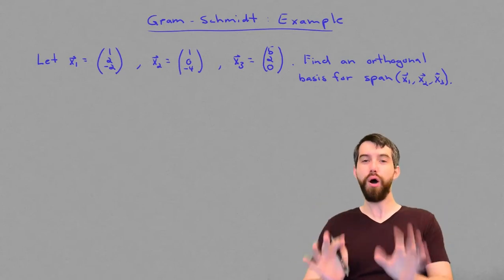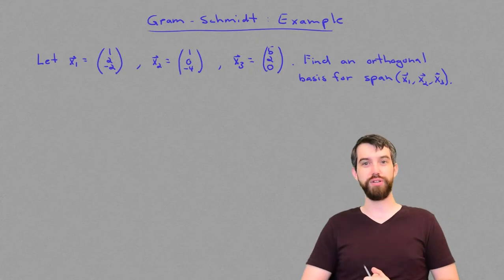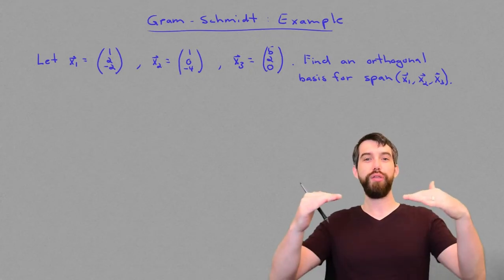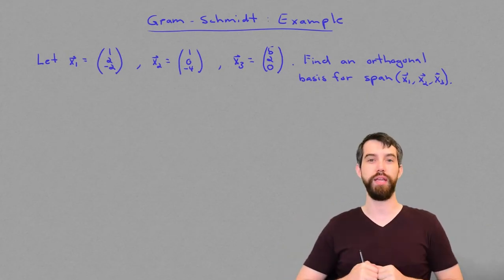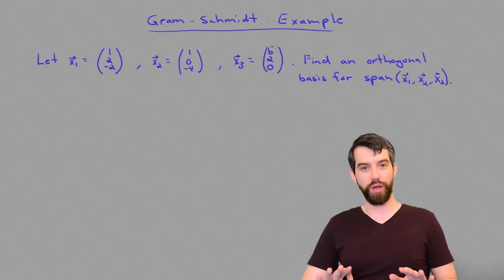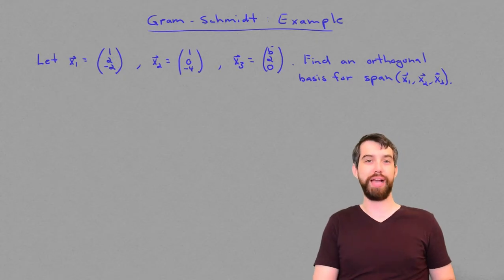In this video, we're going to look at a concrete example of Gram-Schmidt, where I've given you three specific vectors x1, x2, x3. And what our goal is, is to find three orthogonal vectors, a v1, a v2, and a v3, that has the property not just of being orthogonal, but an orthogonal basis for this span of x1, x2, x3.